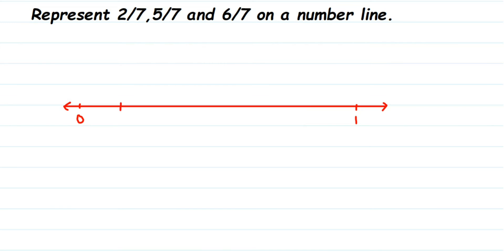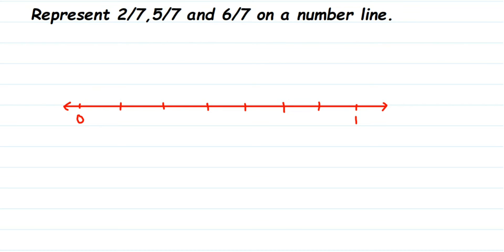The first equal part is one, then two, three, four, five, six, and seven. Count the spaces here — one, two, three, four, five, six, seven. You have seven equal parts. Don't count the lines, just count the spaces.